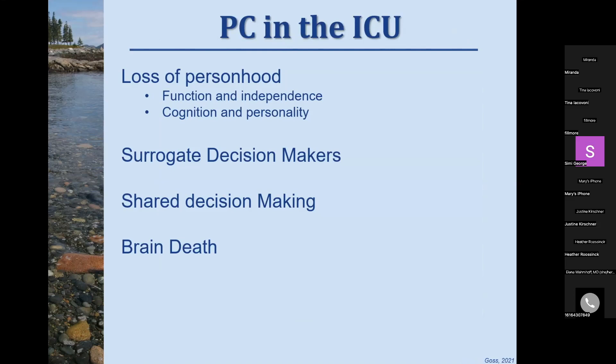Back in the ICU, we specifically acknowledge the loss of personhood — a patient who was functional and independent now faces a completely different life after a stroke. Cognition and personality can be affected by traumatic brain injuries, and even glioblastomas can change who a person is. We discuss who should be the surrogate decision makers, engage in shared decision making around a new diagnosis, and support patients through brain death protocols when that becomes a reality.